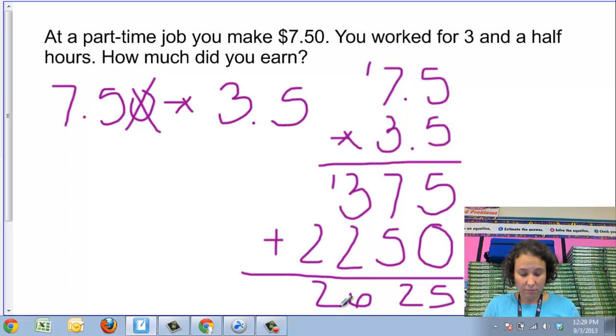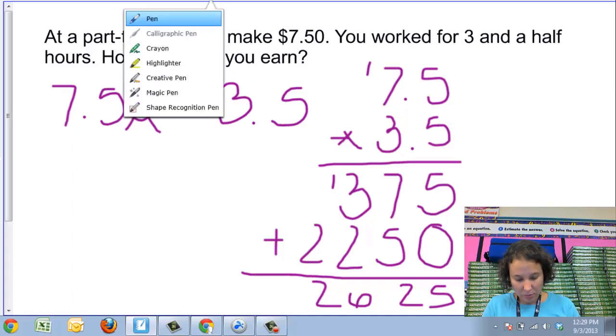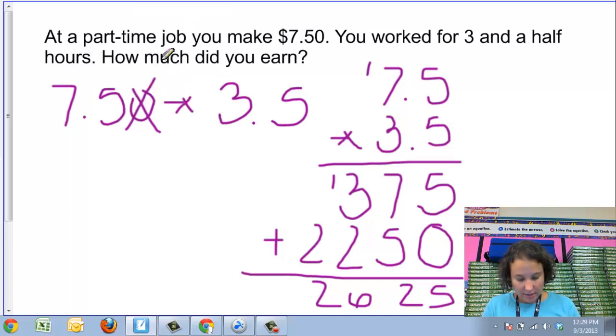Now, if I was multiplying two numbers together that were not decimals, if I was actually doing 75 times 35, I would be done. But since I was multiplying 7.5 times 3.5, I need to figure out where to put my decimal point in my answer.